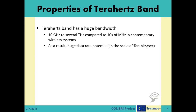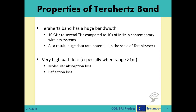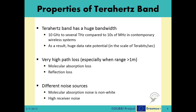These benefits do not come without drawbacks and limitations. Being physically very small, terahertz waves are greatly affected by metal obstacles and even water molecules. As a result, they suffer from very high path losses, which become much more limiting especially when the transmission range is higher than 1 meter. Also, the noise sources affecting terahertz signals differ from classical microwave electromagnetic signals. The molecular absorption noise is shown to exhibit non-white noise behavior, and the receiver noise is shown to be very high in this frequency range.